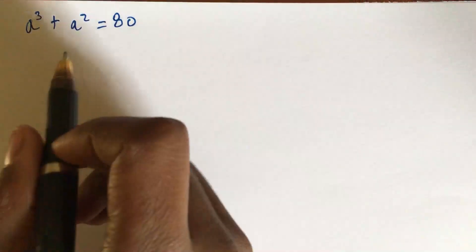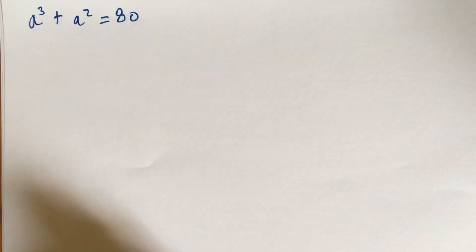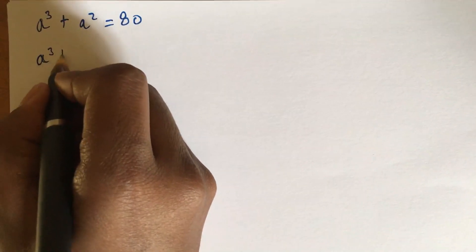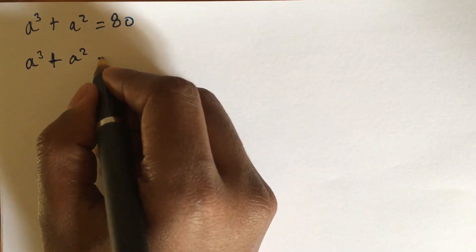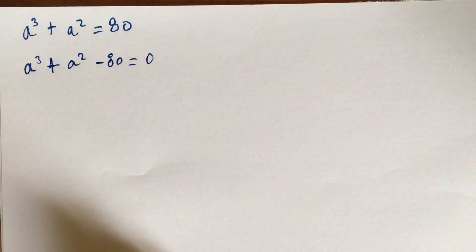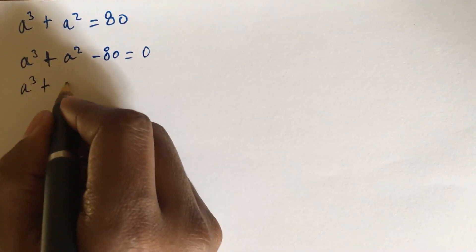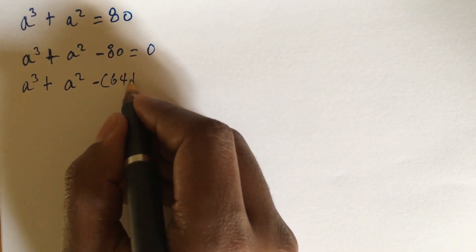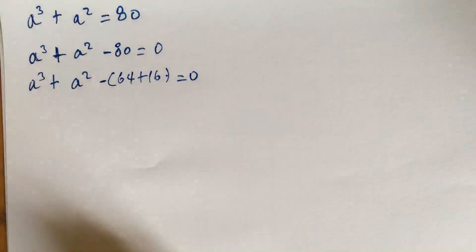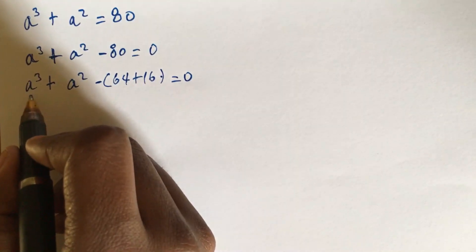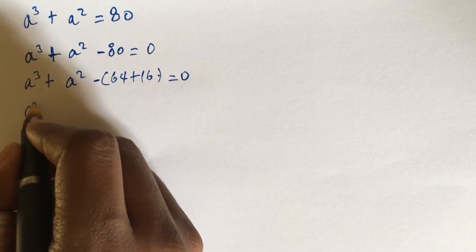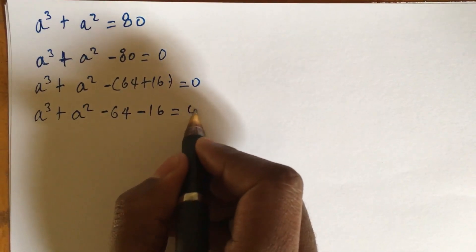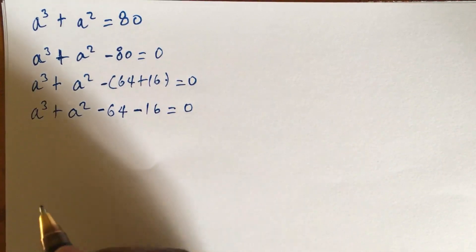A cube plus a square equals 18. How to solve this equation: a³ + a² - 18 = 0. Next, rewrite as a³ + a² - 64 + 16 = 0, which gives a³ + a² - 64 - 16 = 0.